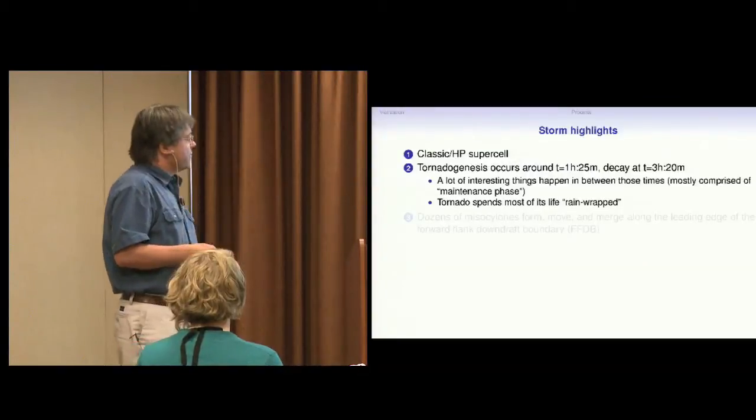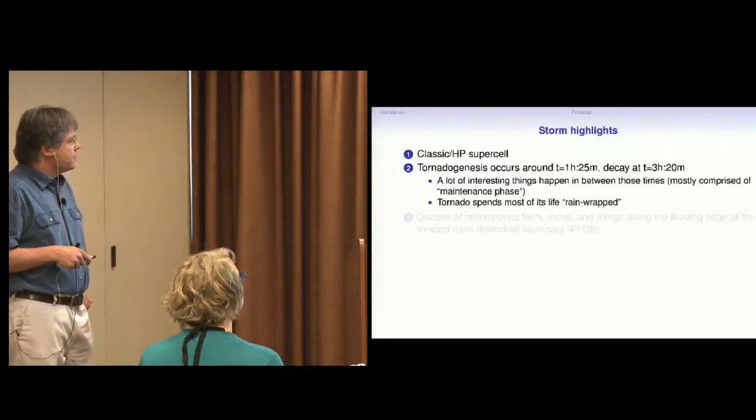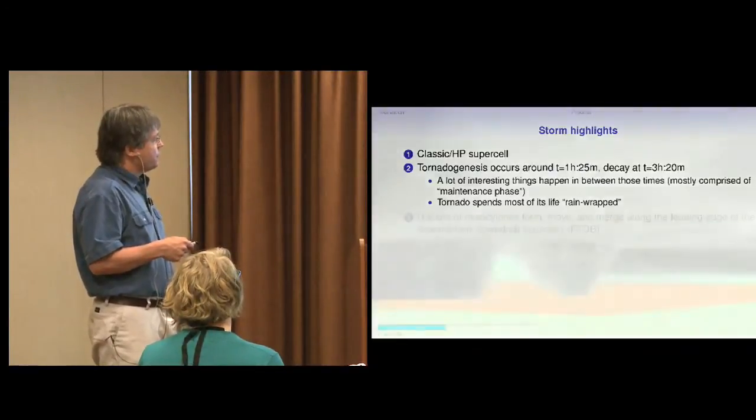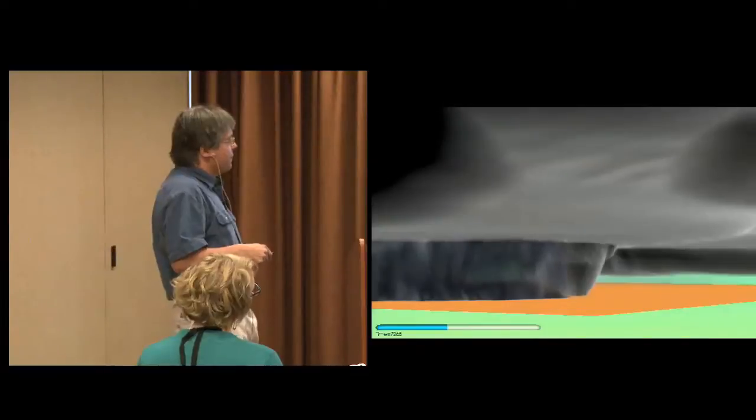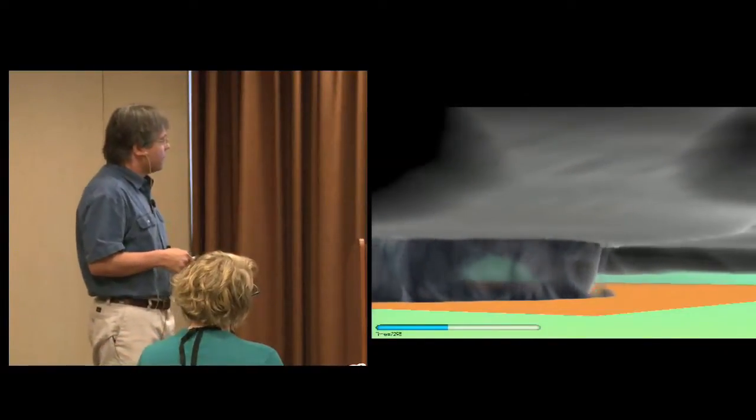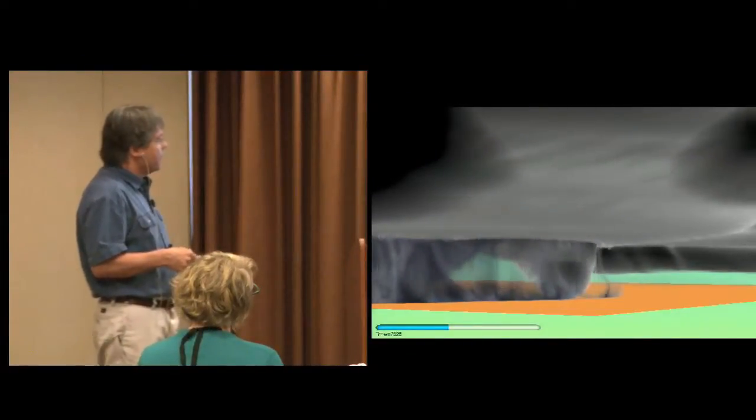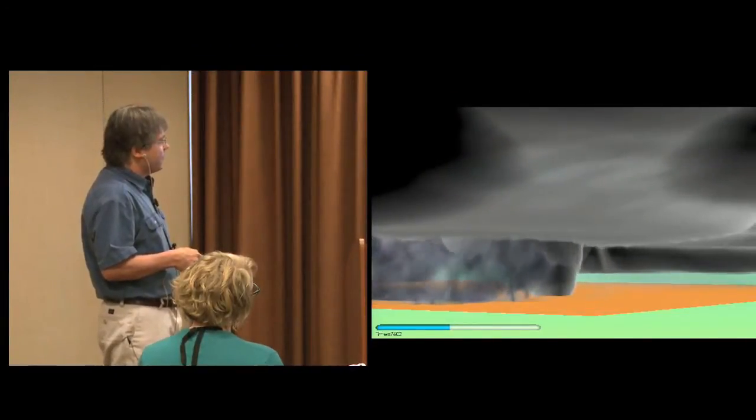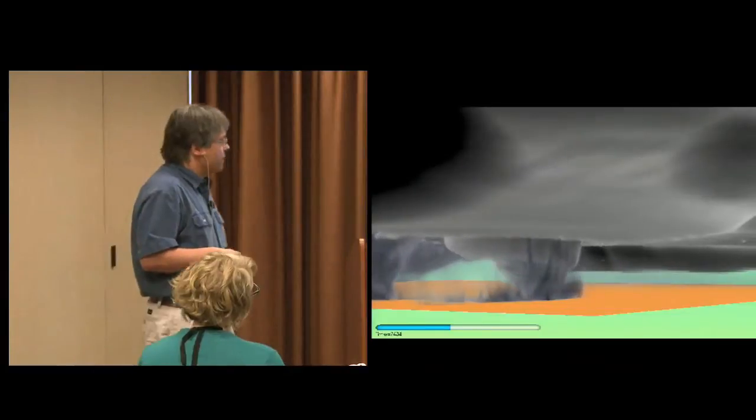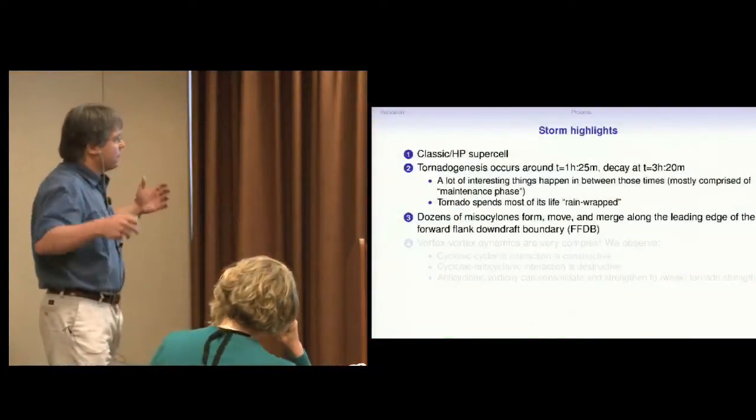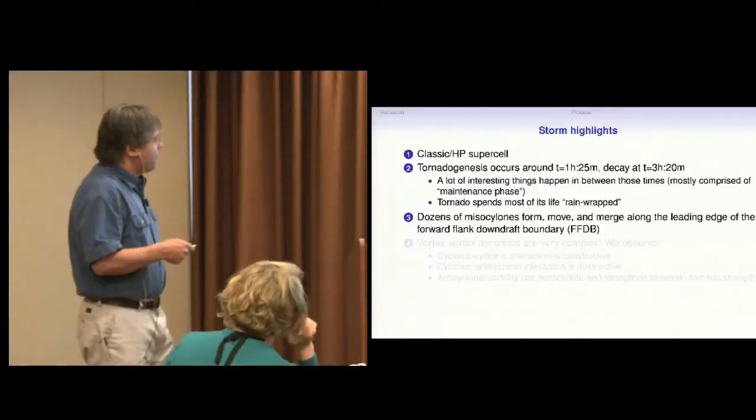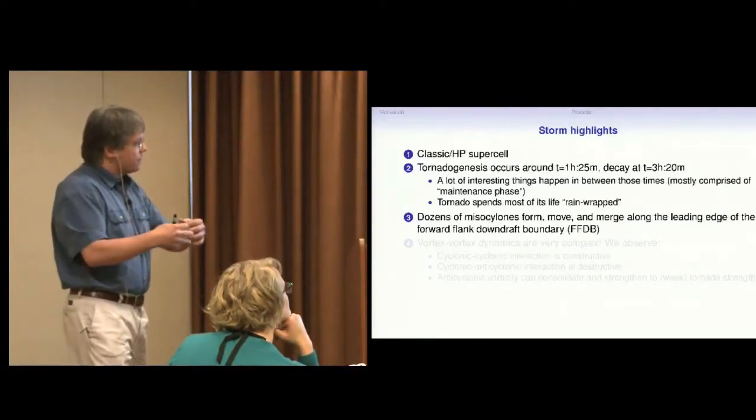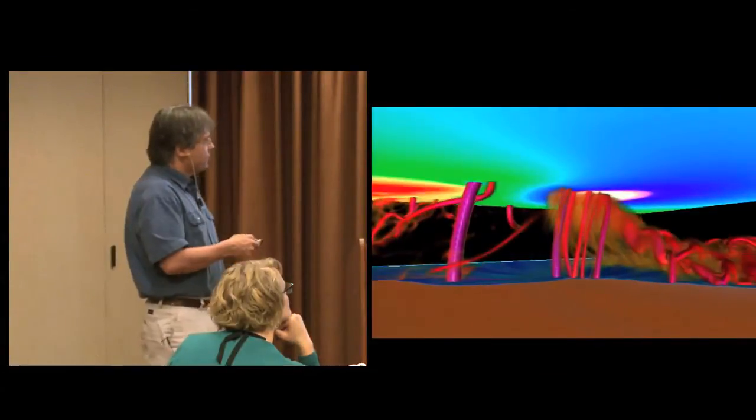So the storm itself starts out as a classic supercell and becomes a high precipitation supercell. It's very dangerous. You see a lot of things going on between when the tornado forms an hour and a half in, and then it's on the ground for two hours. This is a rendering of the rain and the cloud field during the strongest period of the storm. You'll notice that sometimes a tornado is sort of wrapped in rain, and these are very dangerous if you're trying to understand what's going on. You can't see the tornado. There's a lot of very small-scale vorticity, what we call mesocyclones in meteorology. These things kind of merge together to sort of consolidate vorticity.